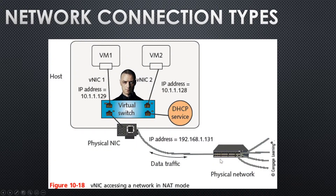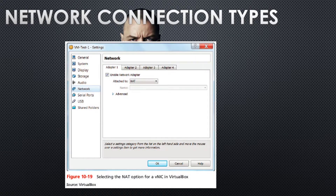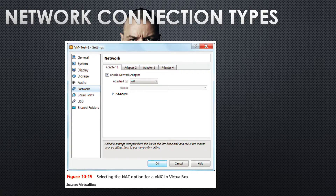Every one of these programs — VirtualBox and all the others — has a fairly scary-looking preference panel. It can be a little intimidating the first time, but you'll get to know your way around it. In my VM settings, for network, I've said I want this VM to be able to use the network adapter, and I want to make up an imaginary IP for it — it doesn't need a real one. That's just one of the ways you configure this stuff.